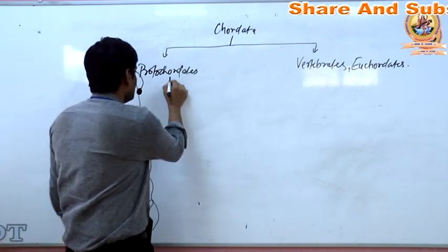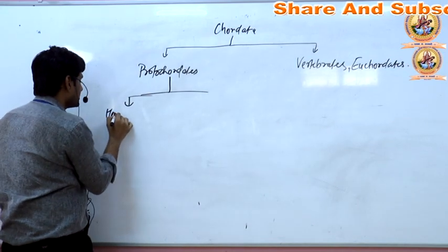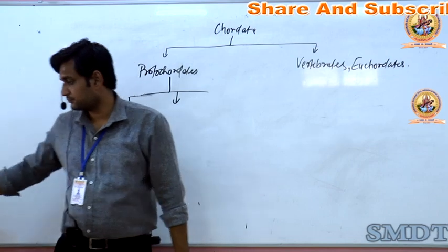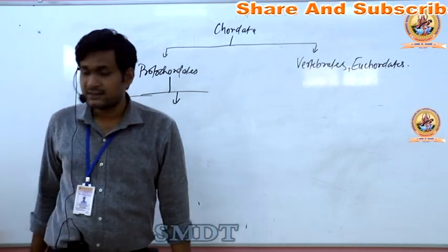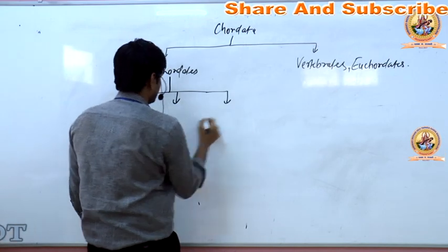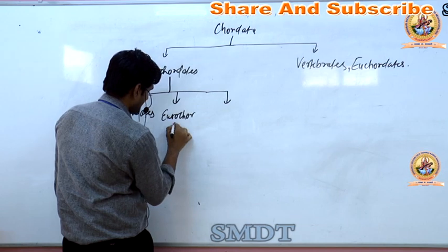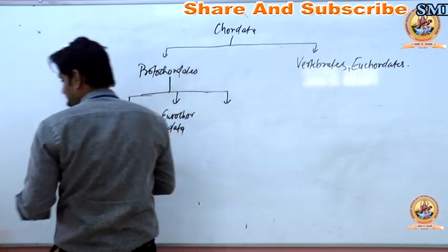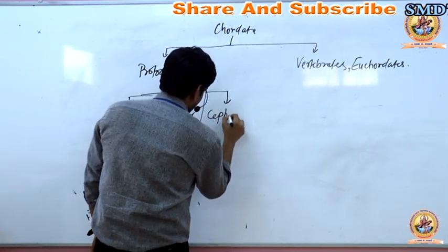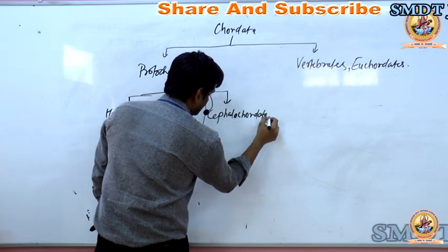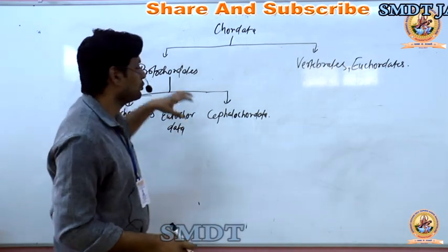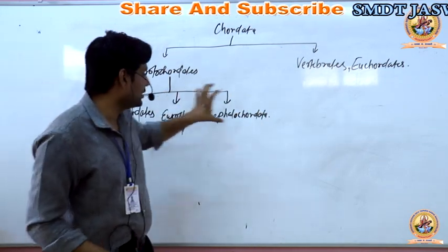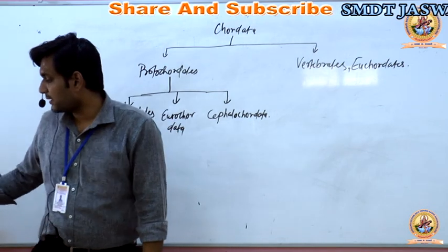Protochordata can be further classified into three parts: Hemichordata, Urochordata, and Cephalochordata. We will study the characters of each of these sub-phylums. Hemichordata, Urochordata, and Cephalochordata are the three sub-phylums of Protochordata, and then we also have Vertebrata, which is divided into Agnatha and Gnathostomata.